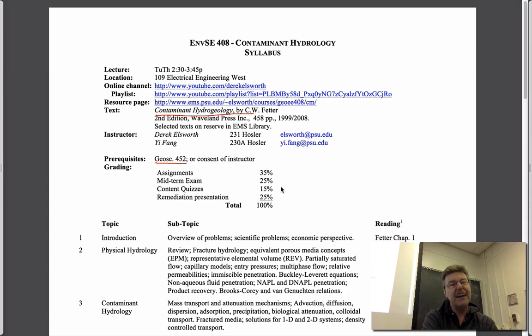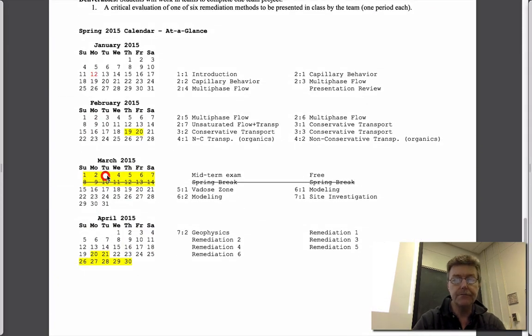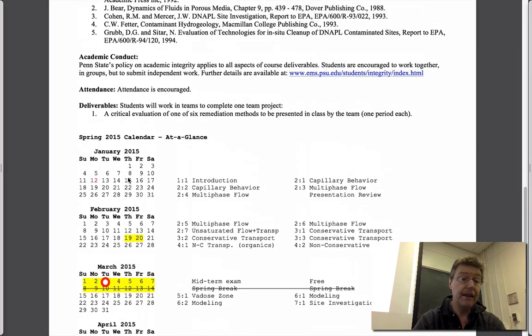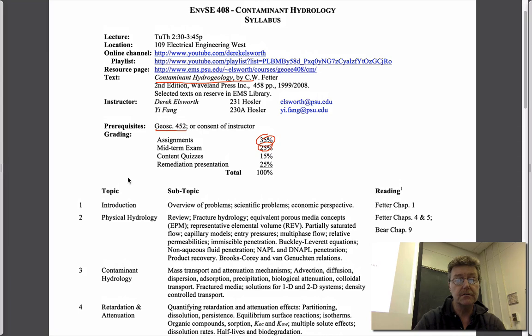In terms of deliverables for the class, I've changed it from last year. The deliverables right now are 75% on your own recognizance, and a quarter are as a group with some kind of peer review. The assignments are open-ended assignments. There's about nine of them. There is a midterm which will be in the week before spring break.